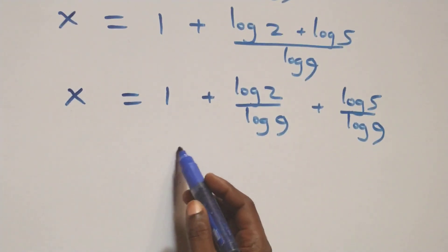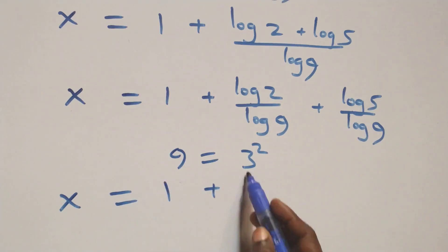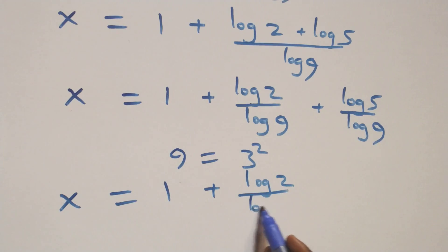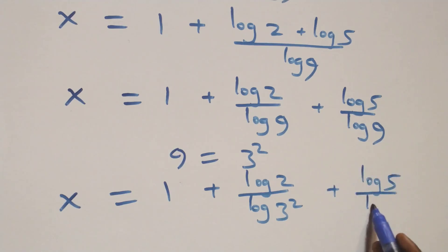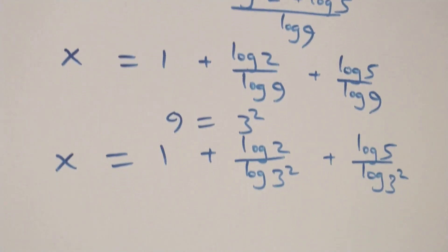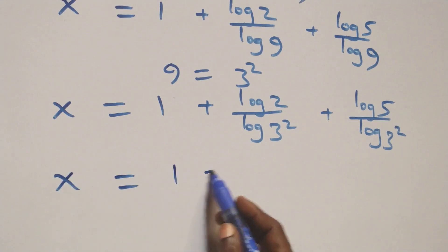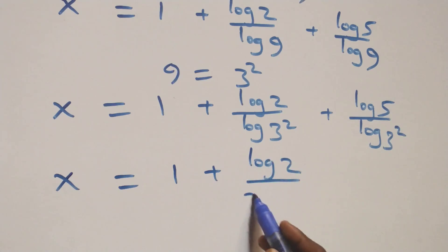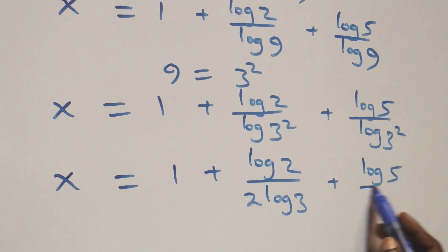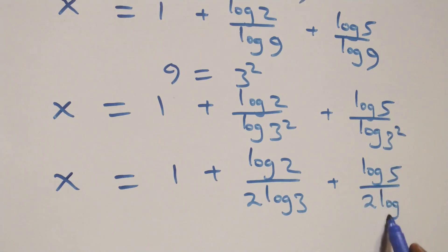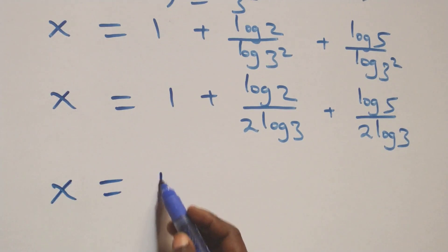Also here, we can write 9 as 3 times 3, which is 3 squared. So x becomes 1 plus log(2) over log(3²), plus log(5) over log(3²). Applying the power rule of logarithms, log(3²) becomes 2·log(3), giving x equals 1 plus log(2) over 2·log(3), plus log(5) over 2·log(3).